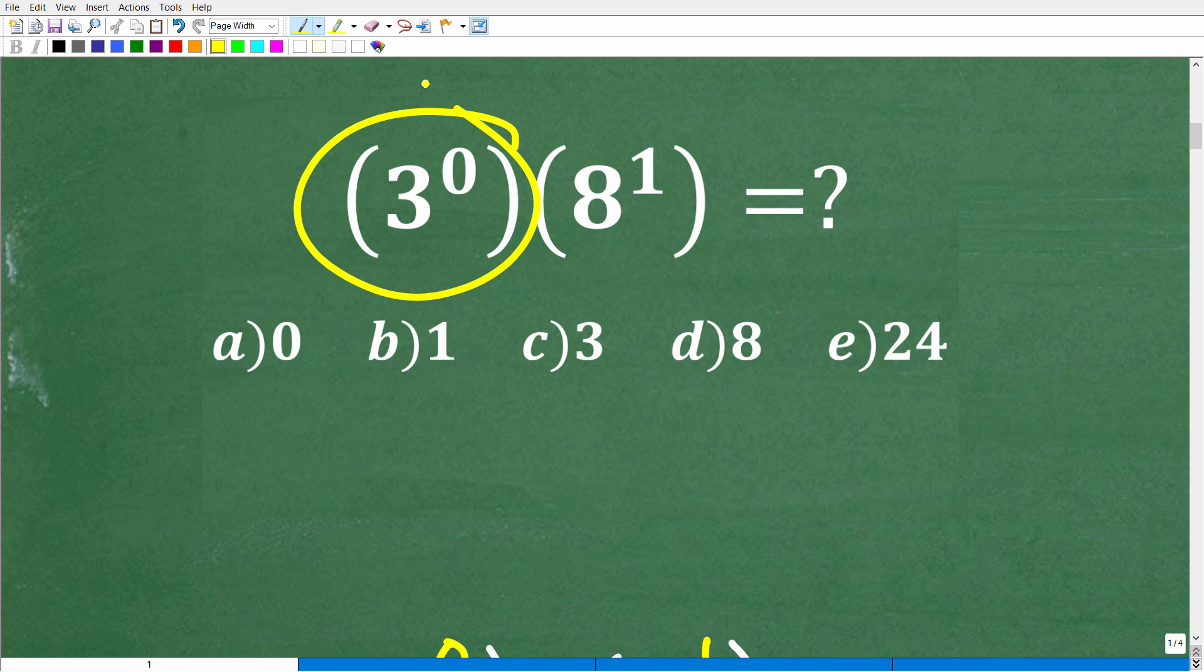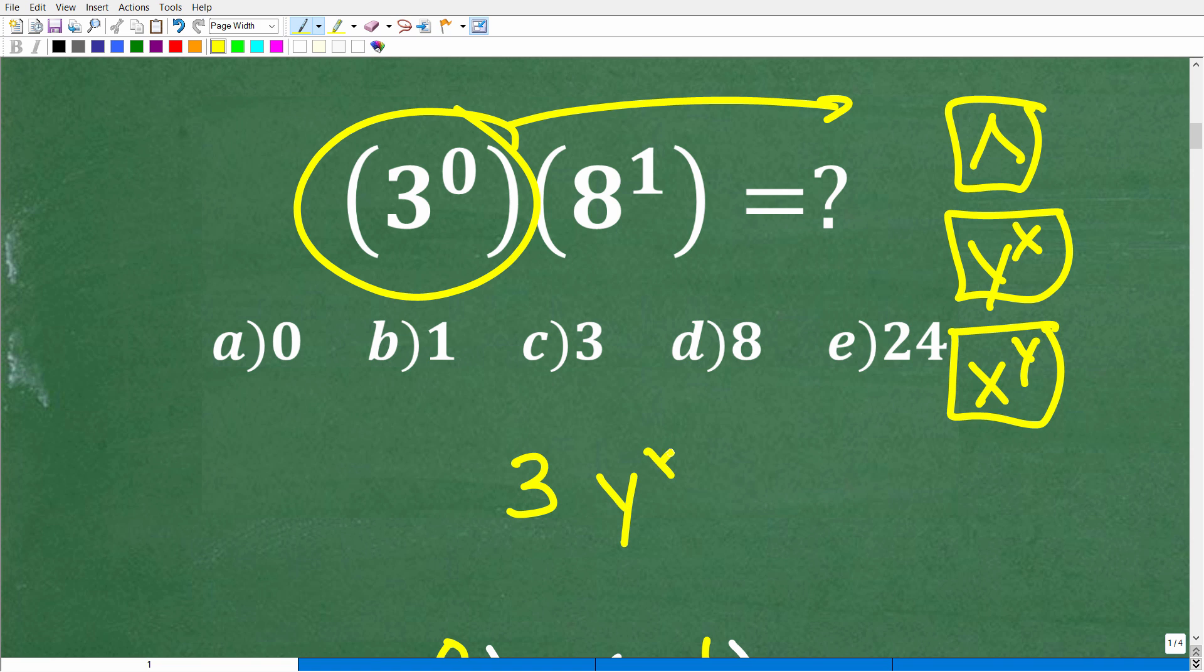Really the key here is what is 3 to the zero power. If you have a calculator and want to figure this out, depending on what type you have, you're going to use one of these buttons, either the caret or Y to the X or X to the Y. That's how you plug in exponents. You'll go 3 Y to the X, hit that button, then hit zero. When you hit enter, you should see a lovely one.